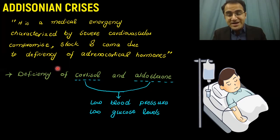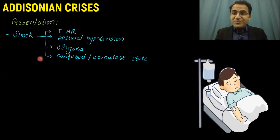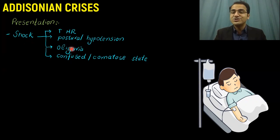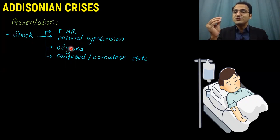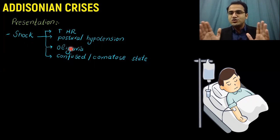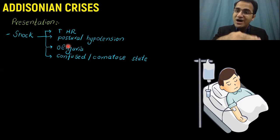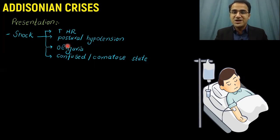Addisonian crisis is a medical emergency that needs urgent medical care. The presentation is that the patient will be in shock and won't be able to maintain blood pressure, developing postural hypotension. To check postural hypotension, you check the patient's blood pressure while lying down, then ask the patient to stand unsupported for at least two minutes and recheck — there will be a major difference because blood pressure maintenance depends on these stress hormones.